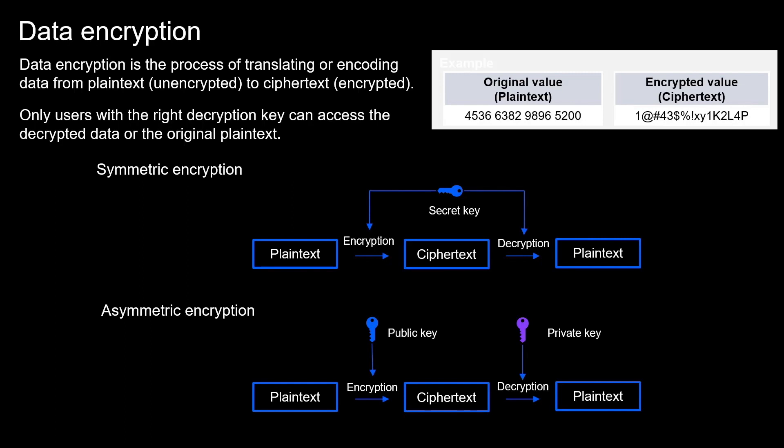There are two types of encryption based on the keys used for encrypting or decrypting: symmetric and asymmetric. Symmetric encryption uses the same key, while asymmetric encryption uses public or private key pairs.